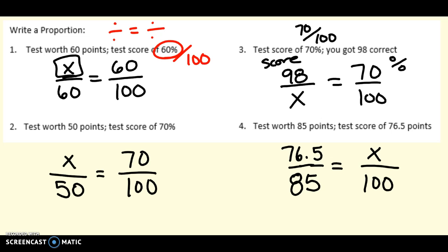Okay, let's talk through them. So the next one, test score, we're on number 3, we're going out of order. Test score of 70%, you got 98 correct. So I got a score of 98 out of how many? I don't know, but it turned out to be 70 out of 100%. That would be my proportion, and I'd solve it for x. Or here, test worth 50 points, so it's out of 50. How many did I get right, so that I got a score of 70 out of 100? Or a test worth 85 points, I had a score of 76 and a half. What percent did I get? So what percent out of 100? So this is just practice setting them up.